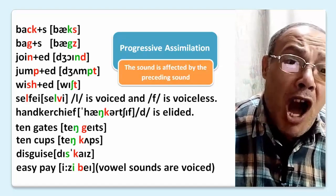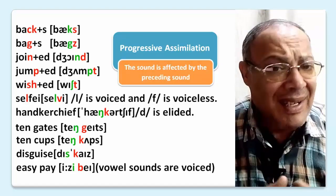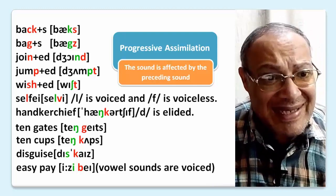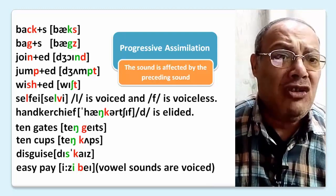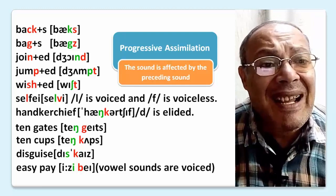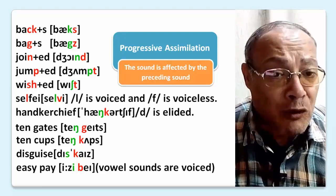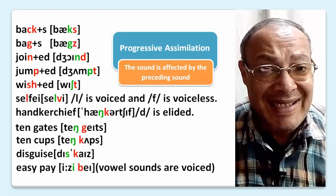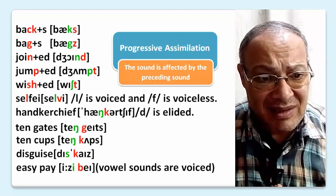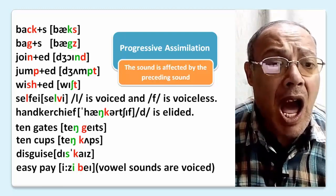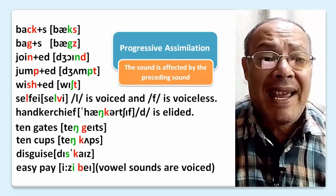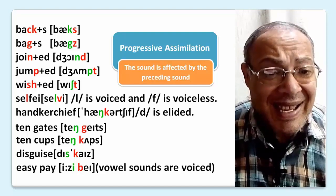Here is progressive assimilation — the sound is affected by the preceding sound. Examples: backs, bags, giant, jumped, wished. L is voicing and F is voiceless. Hang, chief. DE is elided — 'tell gates', 'tell caps', 'disguise'.